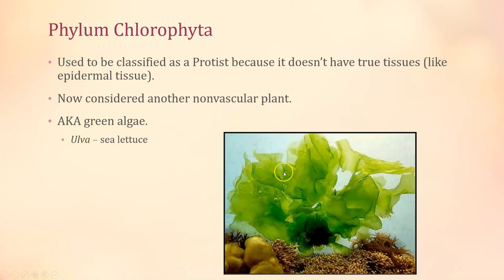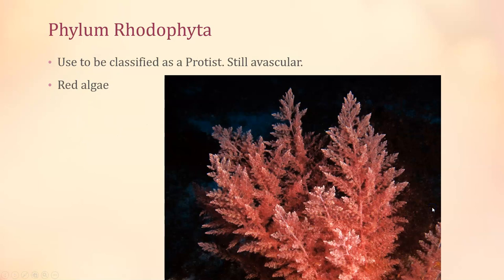Rhodophyta literally means red algae. This also used to be a protist and has now been moved into the plant kingdom, but again it doesn't have true tissue, so no vascular tissue. If you see a specimen that is red in color and looks sort of vaguely plant-like, it's going to be in phylum Rhodophyta.